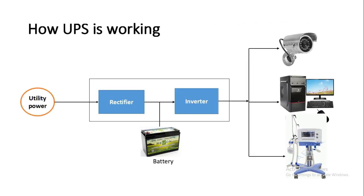Now we will see how UPS is working. See this picture — this is the main power supply connected to the UPS. Inside this UPS unit there is a rectifier unit and an inverter unit. The rectifier converts AC supply into DC supply. The main utility AC supply is connected to the rectifier, so it converts AC into DC. That DC supply is saved into the battery, and then it is also connected to the inverter. The inverter converts DC back into AC, and that AC supply is connected to the load — such as computers, medical equipment, CCTV cameras, and other equipment.